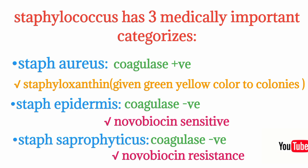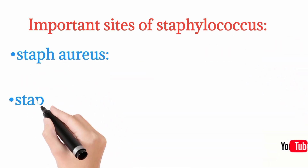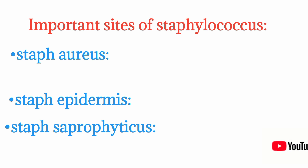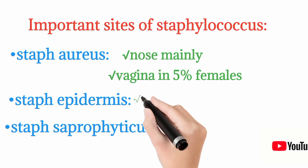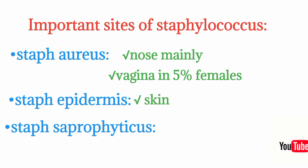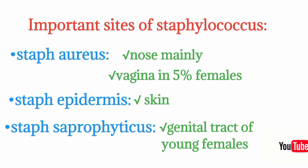To summarize: Staph aureus is coagulase positive; Staph epidermidis and Staph saprophyticus are coagulase negative, differentiated by novobiocin sensitivity. Regarding normal sites, Staph aureus is found mainly in the nose, and also in the vagina in about five percent of females. Staph epidermidis is present mainly on the skin, while Staph saprophyticus is found mainly in the genital tracts of young females.